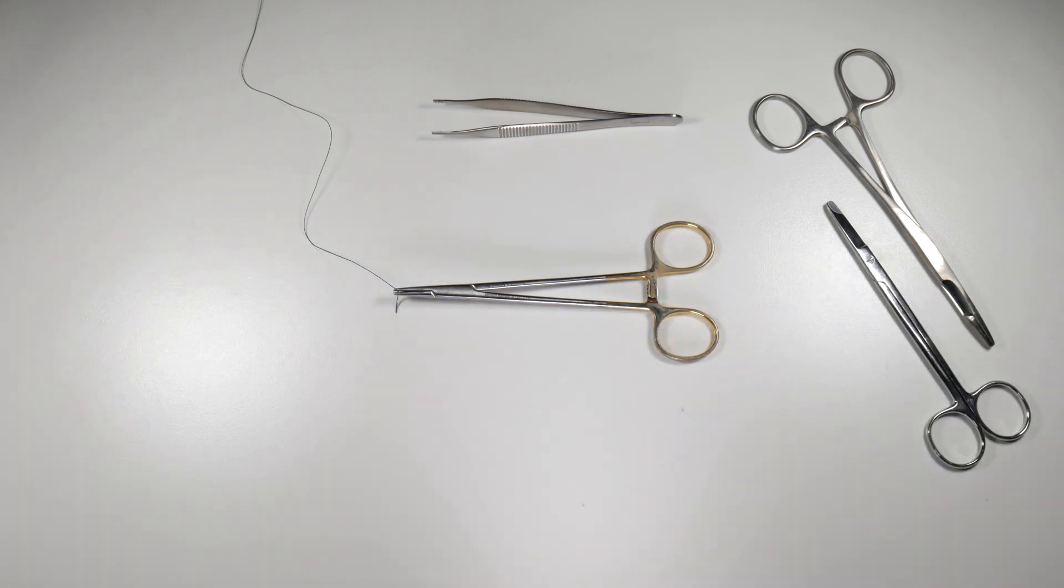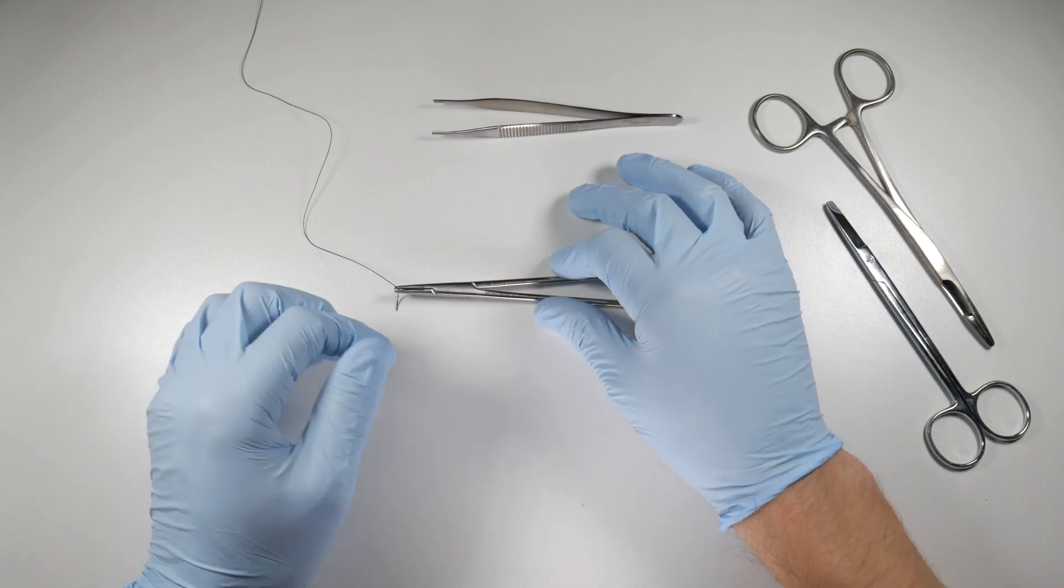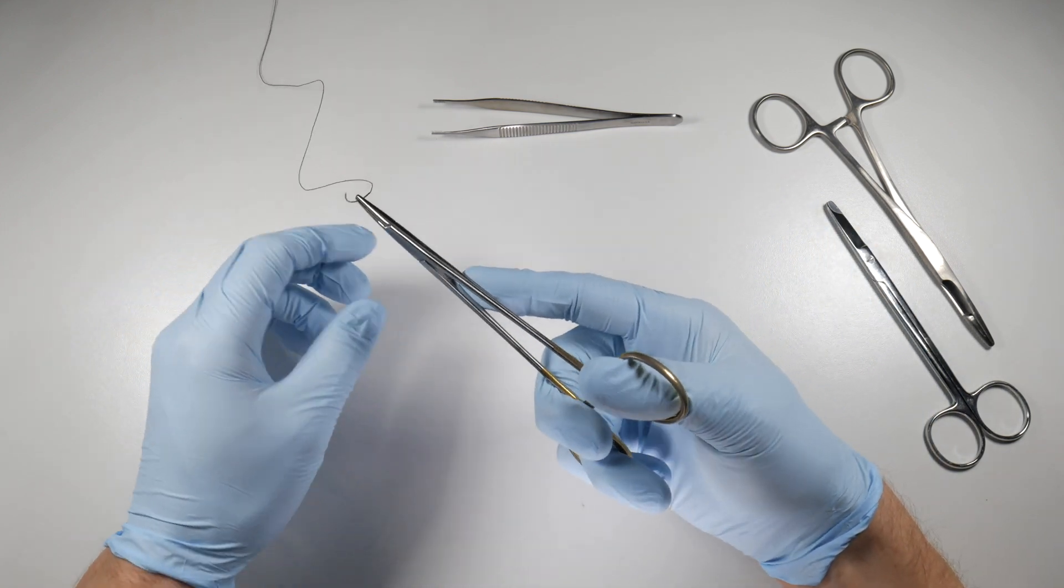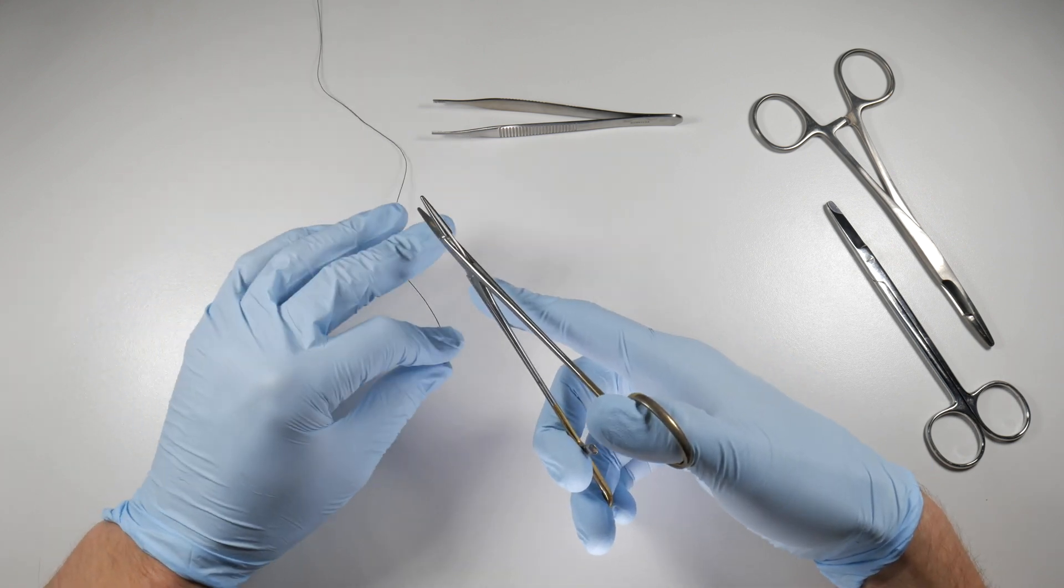Now the armamentarium for suturing is rather straightforward. We've looked at this in other videos. We have our needle driver here, which you remember will be different from a hemostat because it has this cross-hatched pattern on it on the beaks.